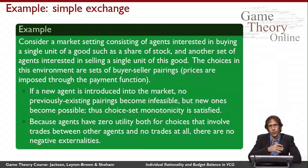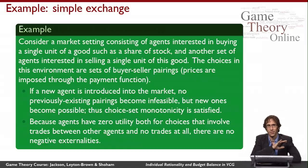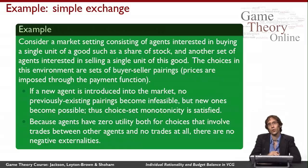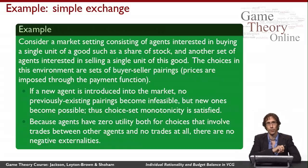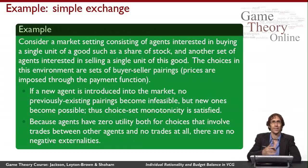Now let's look at a richer example where the set of choices does change. Consider a simplified stock market with two kinds of agents: some have a single unit of stock they want to sell, and others want to buy one share. The choices the mechanism can make are different ways of pairing buyers and sellers — every buyer can interact with only one seller, every seller with only one buyer, and nobody has to interact. So pairings ranging from nobody matched to as many people as possible matched are all valid.